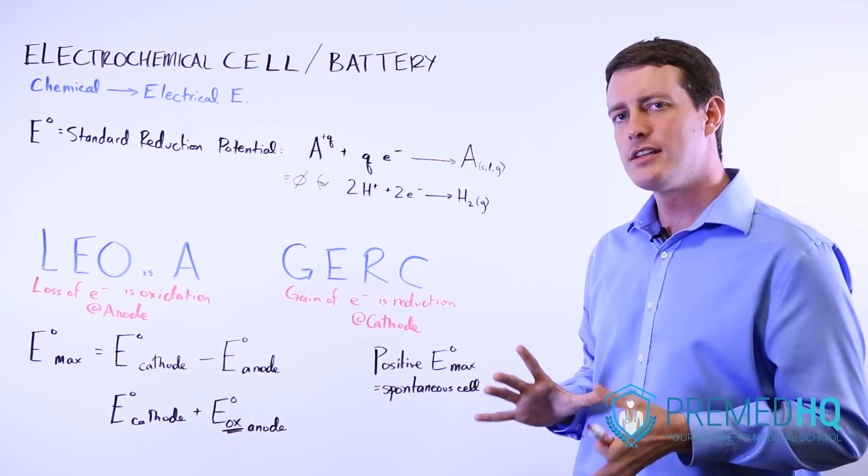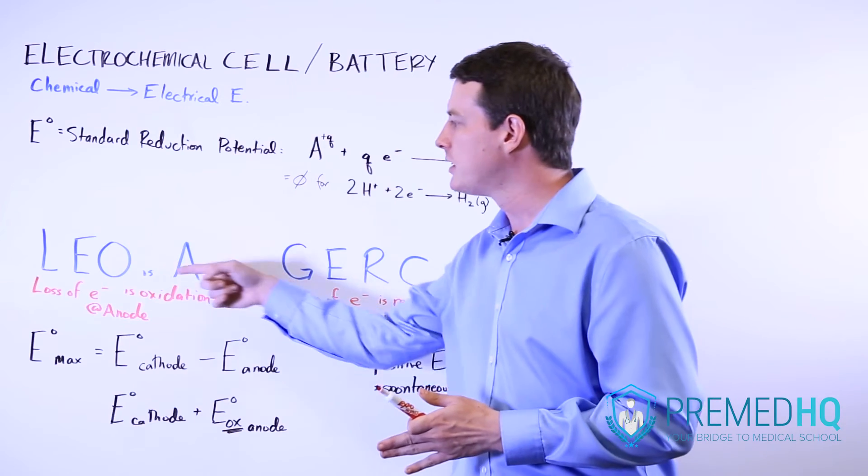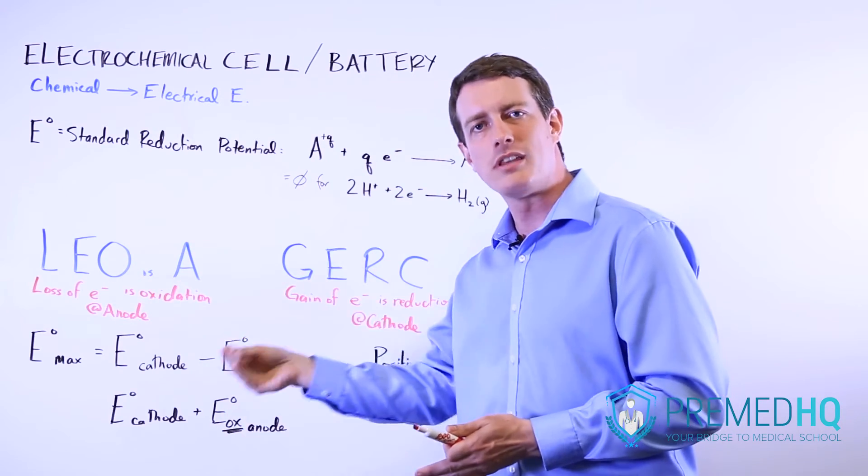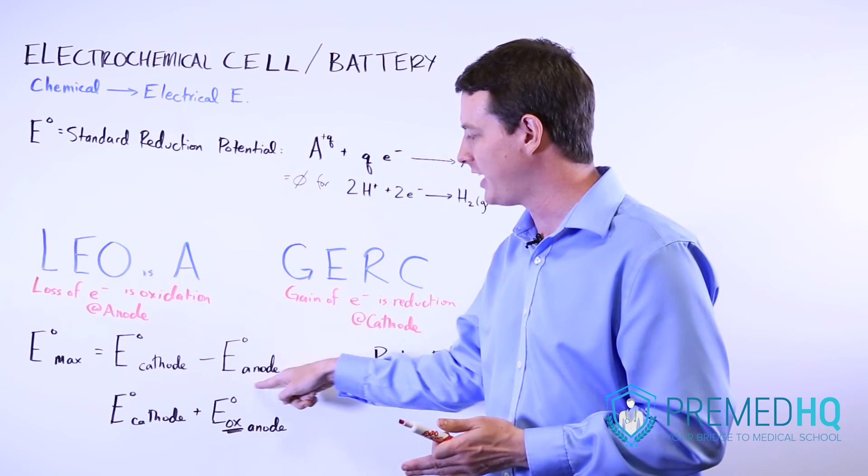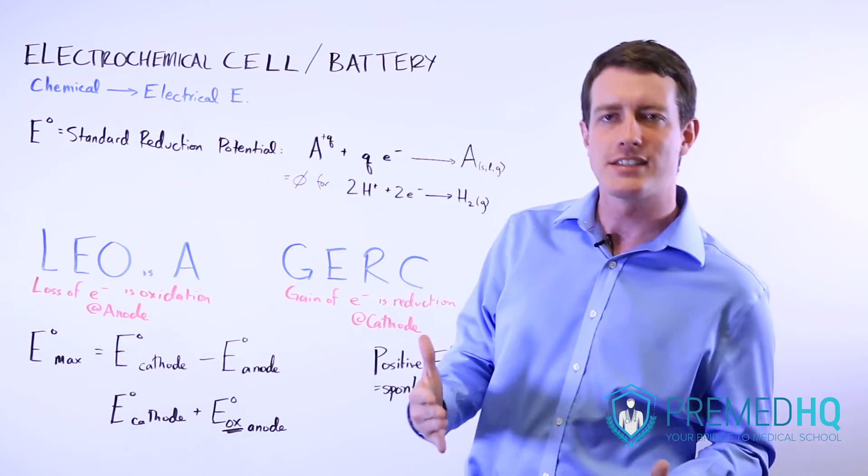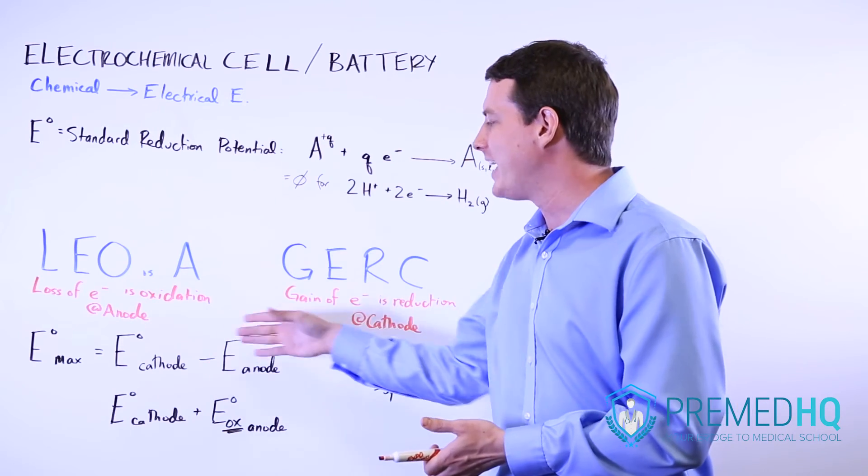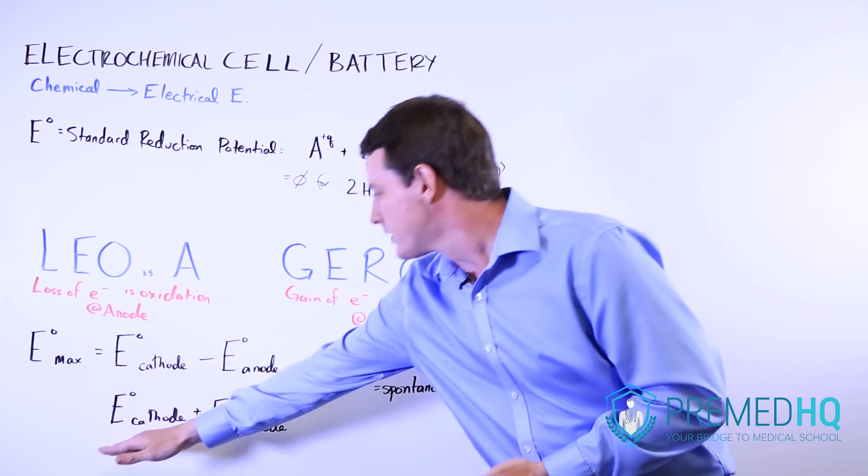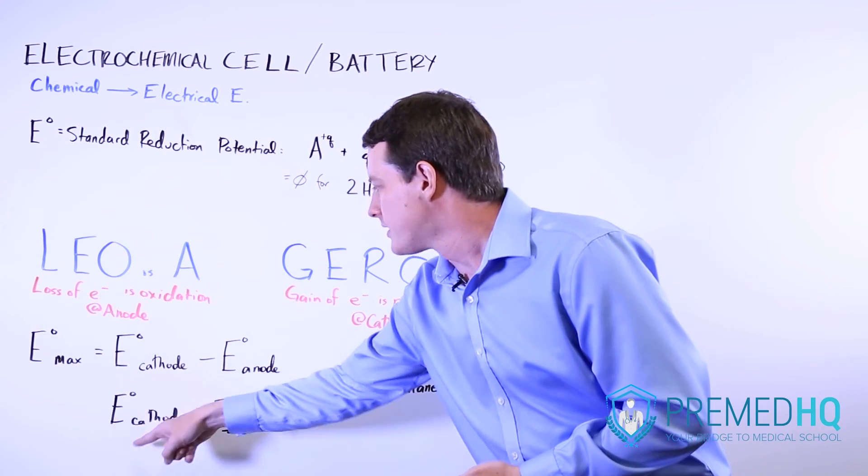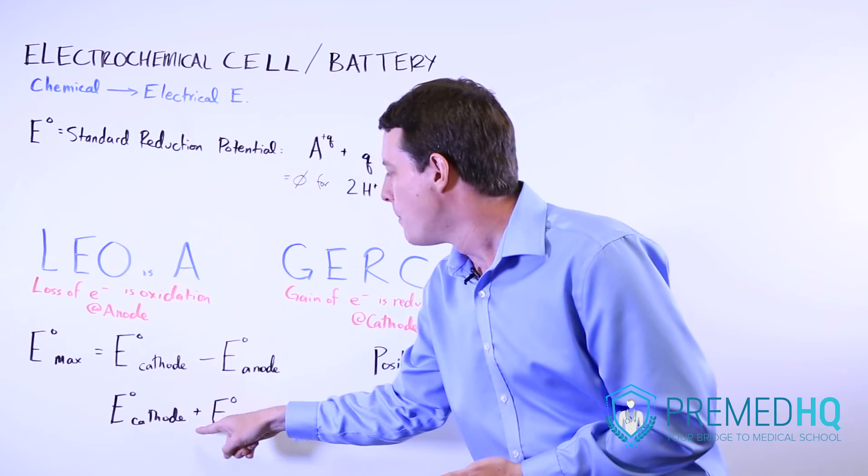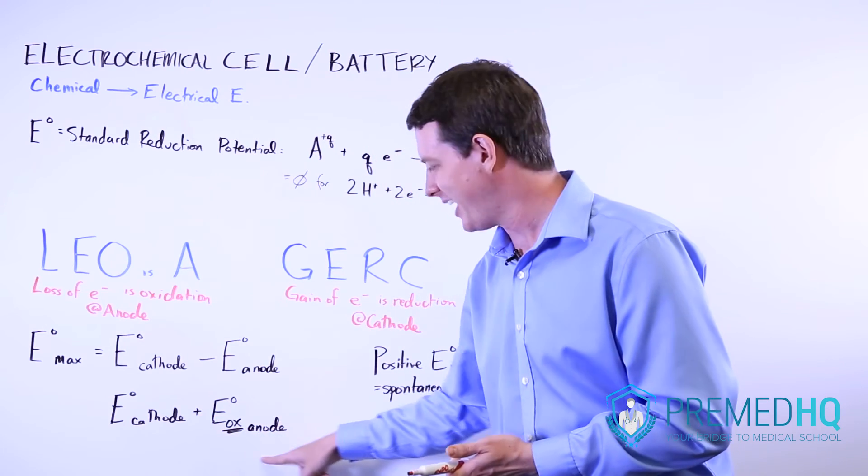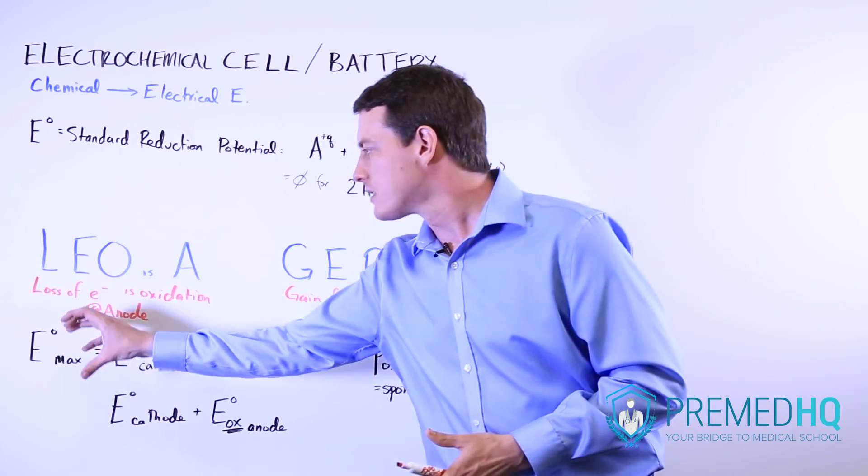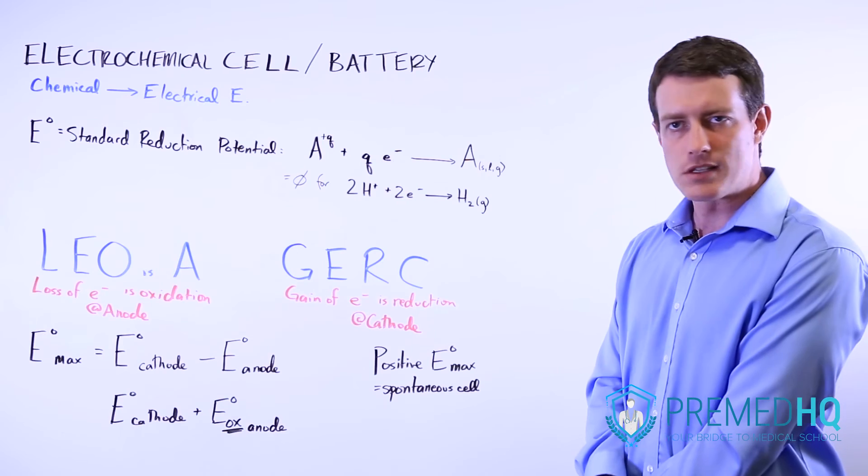Why do you subtract? The reason you subtract is because the anode sees an oxidation. And remember that you switch signs with the oxidation. So if we're looking at the reduction potential of the anode, we would have to subtract that which has the same effect as adding the oxidation potential of the anode. And you may notice that I rewrote this here. The standard reduction potential of the cathode plus the oxidation standard potential at the anode is the way to think of that. And that gives you the maximum electrical potential across the battery.